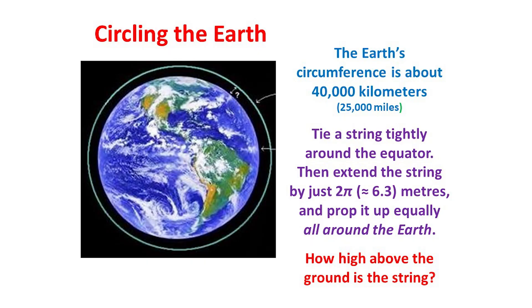To conclude, I'd like to show you a puzzle which dates from the 18th century. If you haven't seen it before, you may find its answer surprising. The circumference of the Earth is about 40,000 kilometres. Assuming the Earth to be a perfect sphere, suppose we now tie a piece of string of this great length tightly around the equator. We then extend this exceedingly long string by just 2π metres, that's about 6.3 metres, and prop it up equally all around the Earth. How high above the ground is the string?